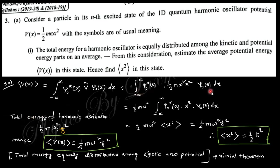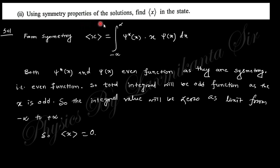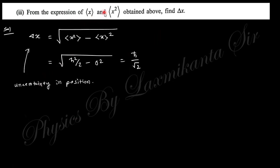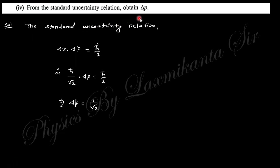Taking this result and using symmetry properties: ψ* and ψ have definite parity, so integrating gives ⟨x²⟩ = ℏ/(2mω)×(2n+1). Using this, Δx = √⟨x²⟩. Then from the uncertainty principle Δx·Δp = ℏ/2, so Δp = ℏ/(2Δx).